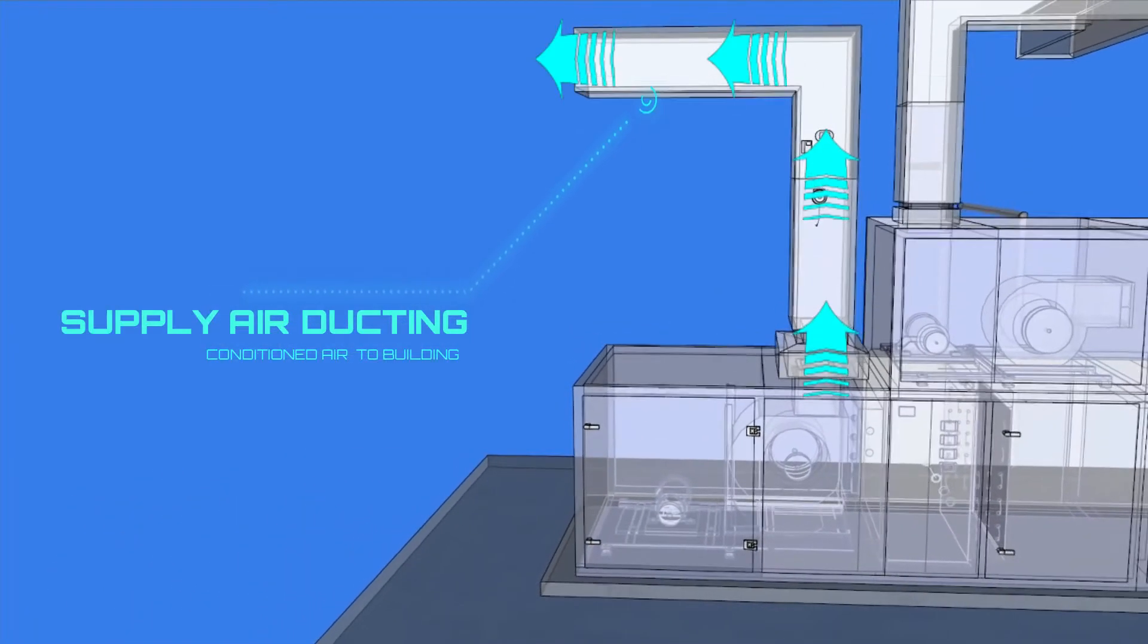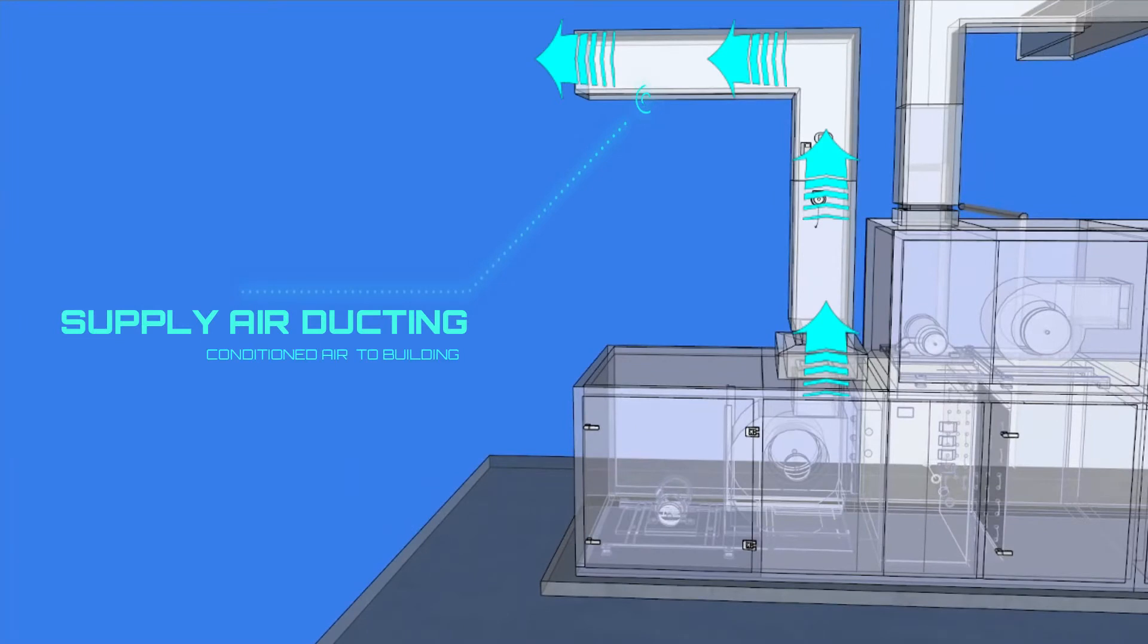The supply duct system distributes air to the terminal units, registers or diffusers into the conditioned space.